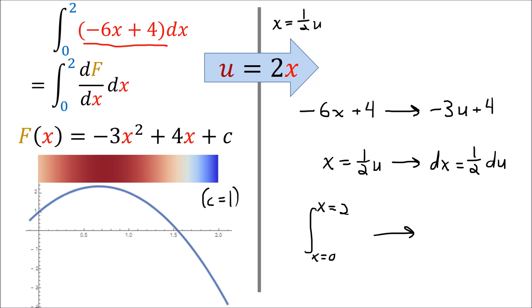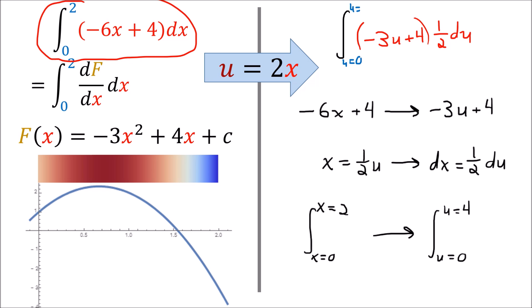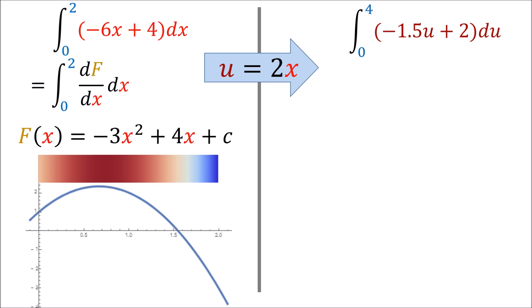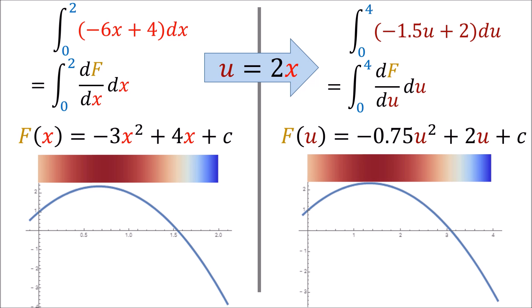So the entire integral becomes (negative 3u plus 4) times one-half du from u equals 0 to u equals 4, which distributes to negative 1.5u plus 2 du. Writing this expression as df/du gives an antiderivative f as a function of u. Visualizing this function as a scalar field or curve, you'll notice the pictures are exactly identical to before — the only difference is that in the first image we measure using x, and in the second using u.